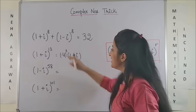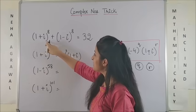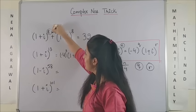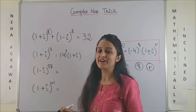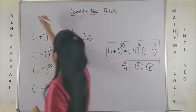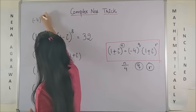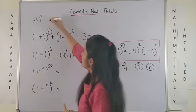Have a look. Like for the first one, 1 plus iota raised to power 8. Well, luckily 8 gets divided by 4 completely, so here I was left with minus 4 square.